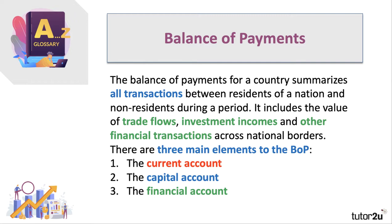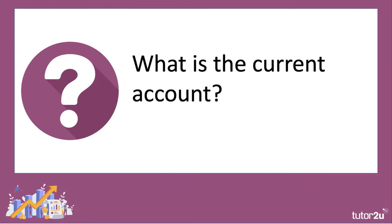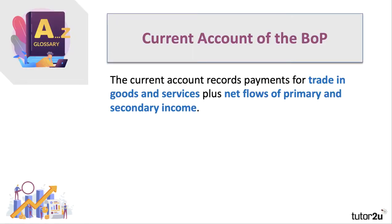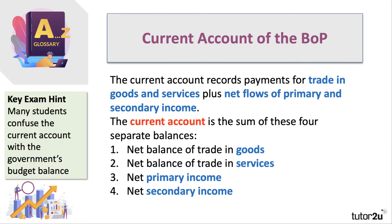There are three main elements to the accounts: the current account, the capital account, and the financial account. From an A Level and IB perspective, parts one and three are the most important, but we will have a video on the capital account as well. The current account represents payments for trade in goods and services, plus net flows of primary and secondary income. There are four main components: the trade balance in goods, the trade balance in services, net primary income, and net secondary income. 'Net' simply means inflow minus outflow, or credit minus debit.